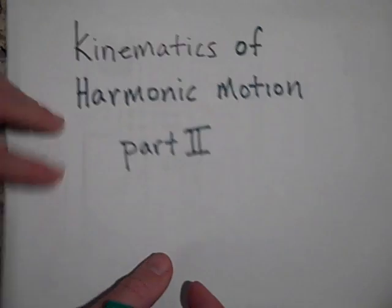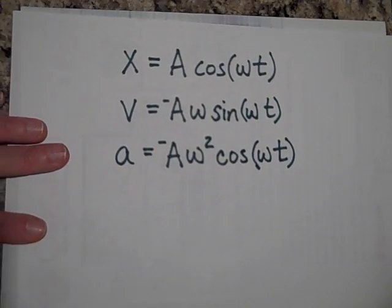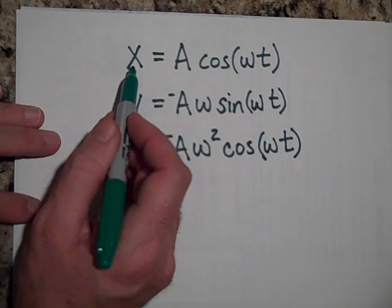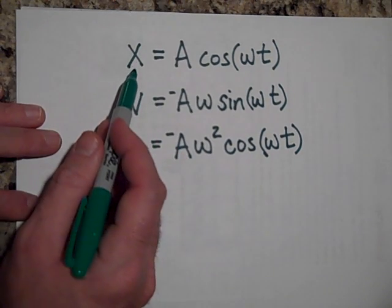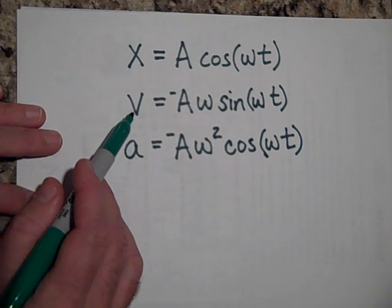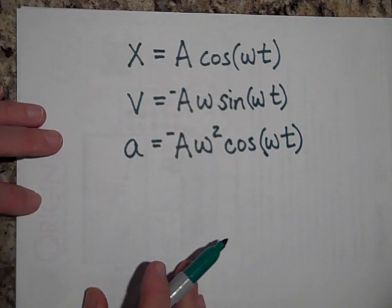Okay, I kind of got caught off on that last one. We had these three equations that would describe simple harmonic motion: the position of an object in simple harmonic motion, the velocity of the object in simple harmonic motion, and the acceleration of the object in simple harmonic motion.